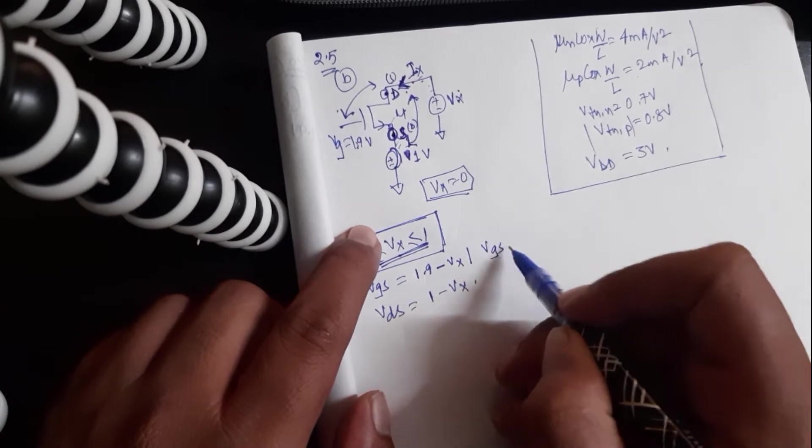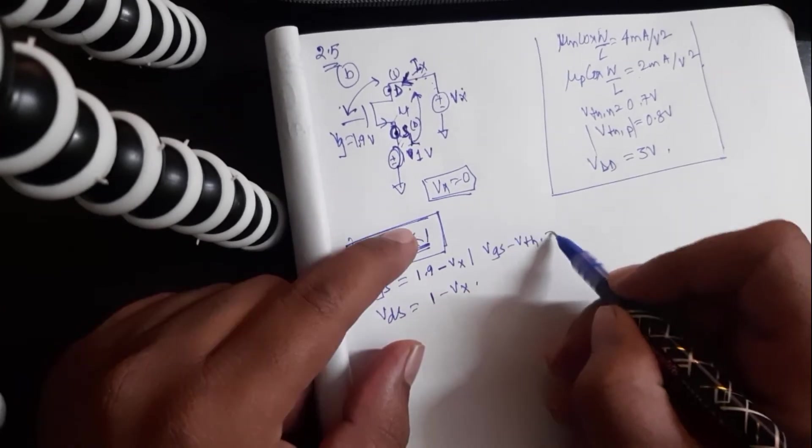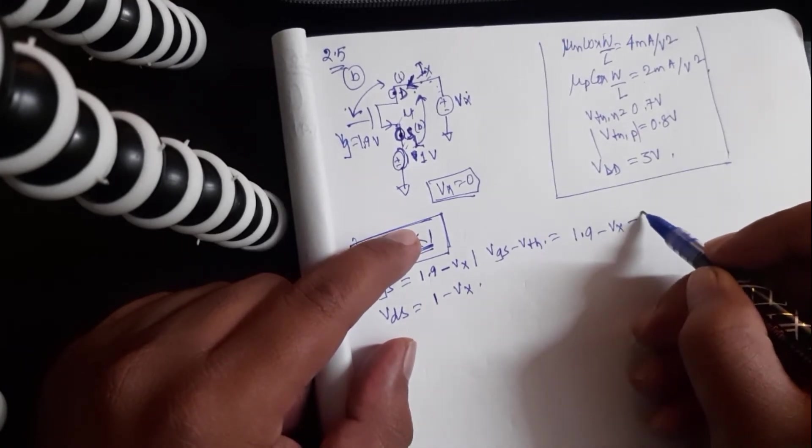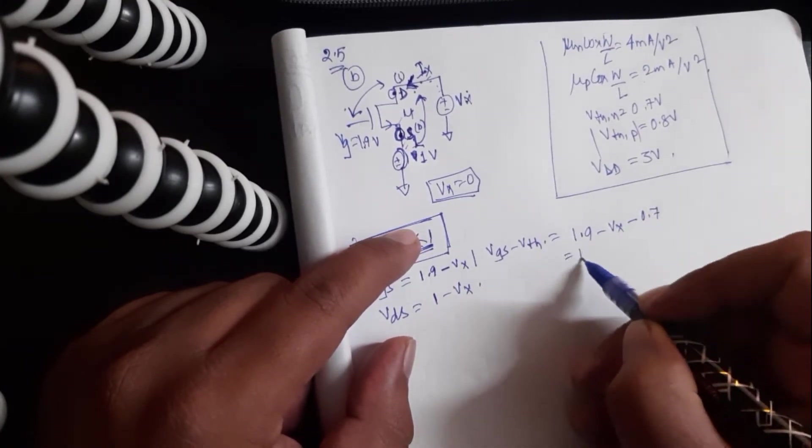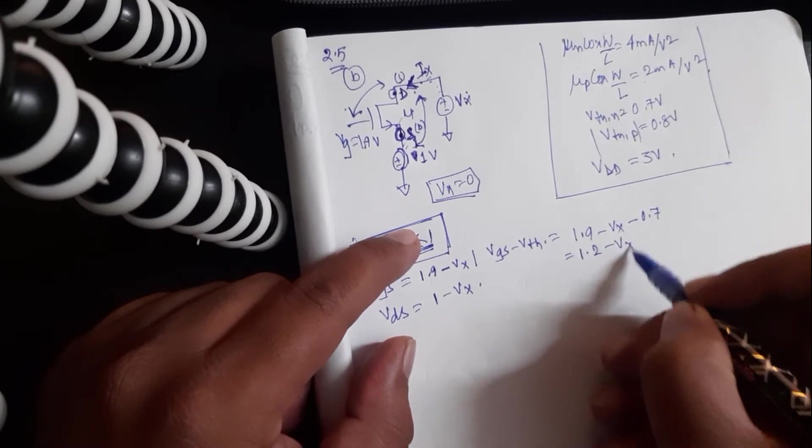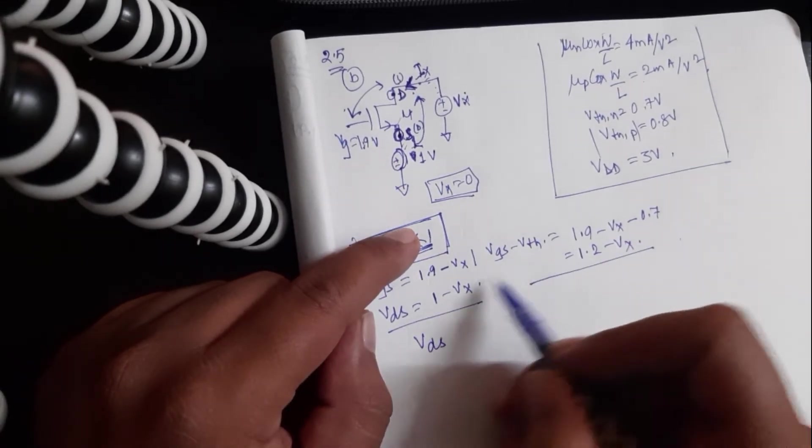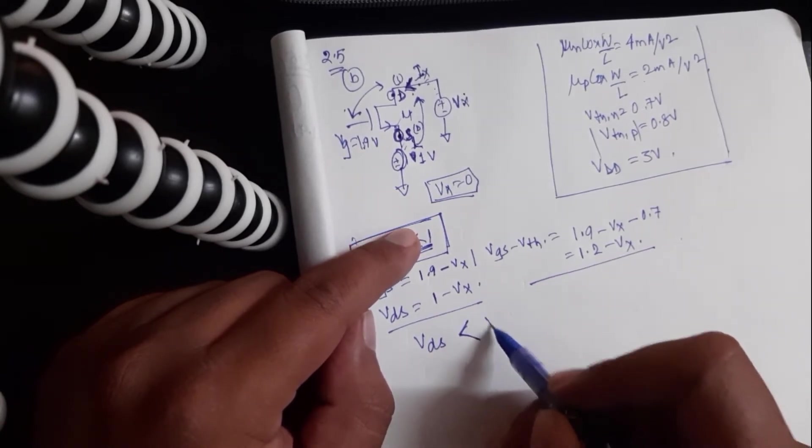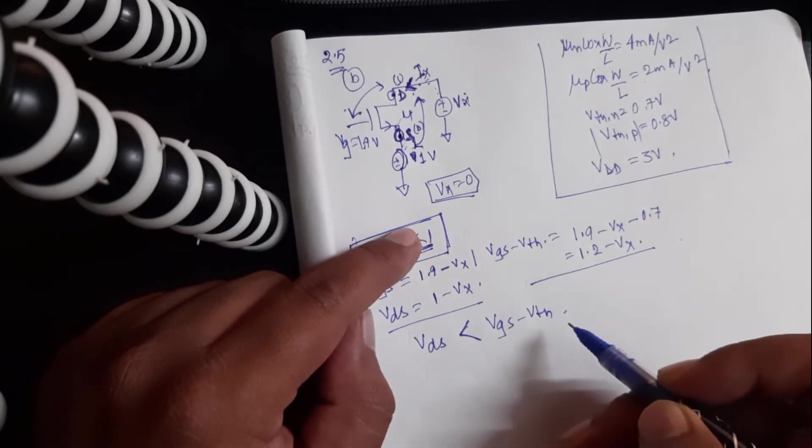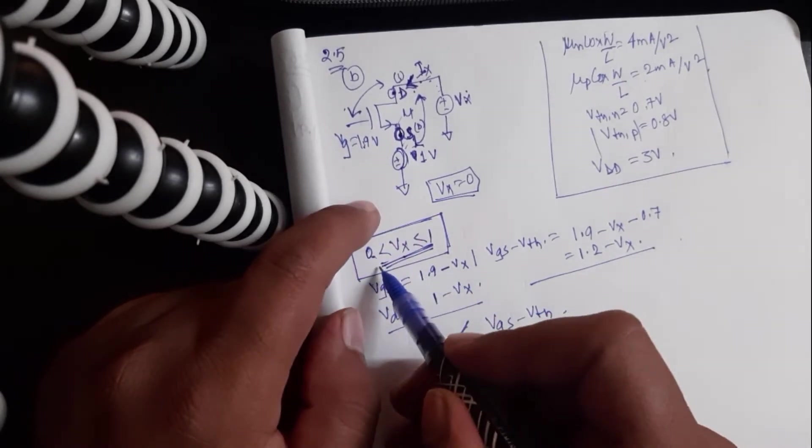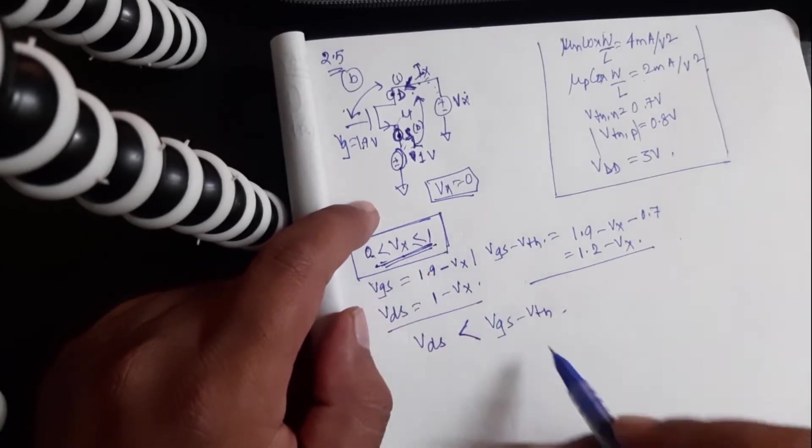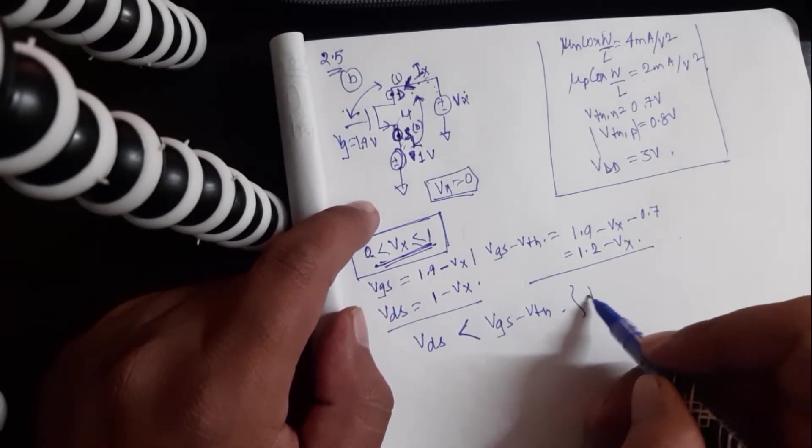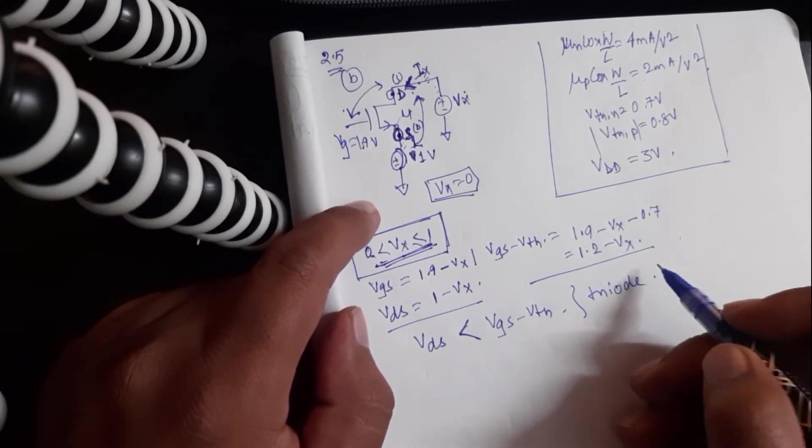From Vgs, let us find out Vgs minus Vth. This should be 1.9 minus Vx minus 0.7, which is 1.2 minus Vx. And clearly see that Vds will always be less than Vgs minus Vth. That means from 0 to 1, this transistor will always be in triode region.